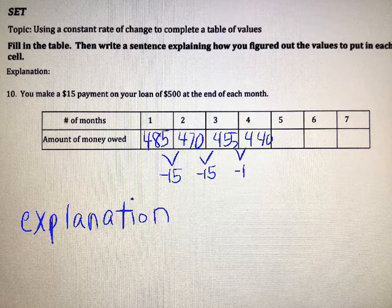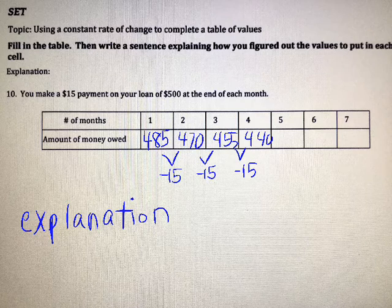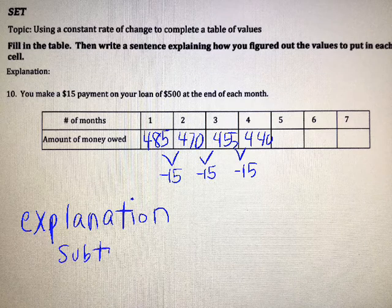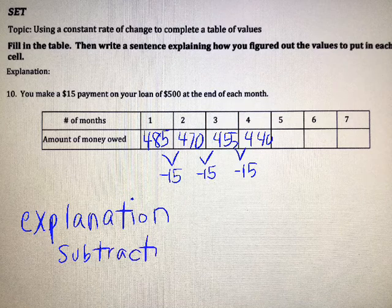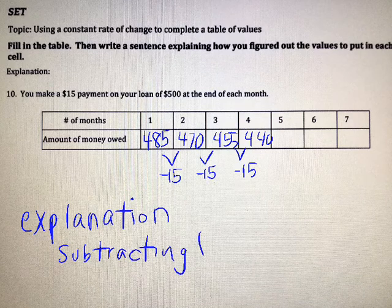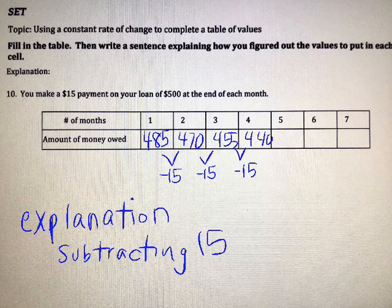If we wanted to explain our thinking, we could say something simple like, we are subtracting $15 per month from $500.